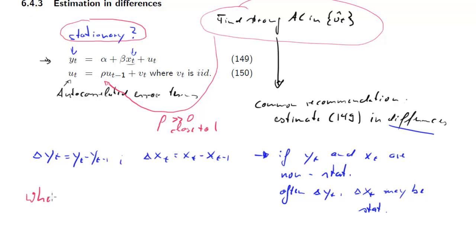So the question is, when is this a sensible strategy? And what we mean is this one here, estimating 149 in differences. So this is the question we're going to ask. And we know there are two issues we have to look out for: autocorrelated error terms and what the consequences are, and stationary or non-stationary data and what the consequences of this are.